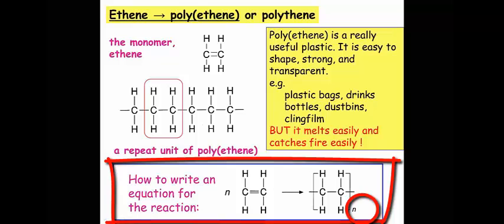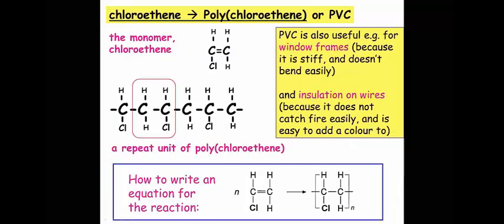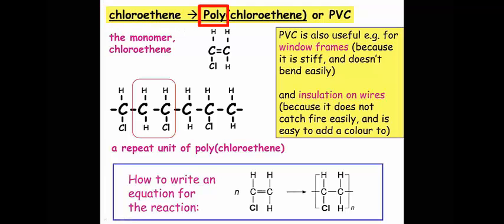You will notice that the monomer and the polymer look very similar. To name a polymer, you take the name of the monomer and write the word poly in front of it. You may also write the name of the monomer in brackets. So for example, chloroethene will become poly(chloroethene).